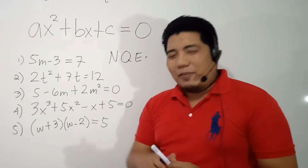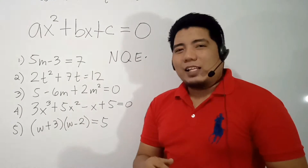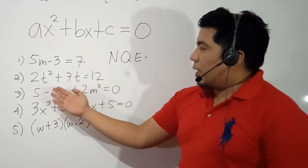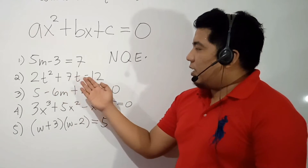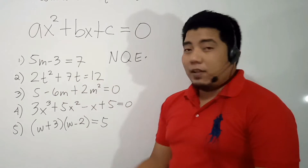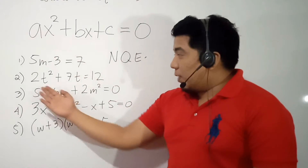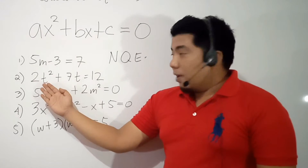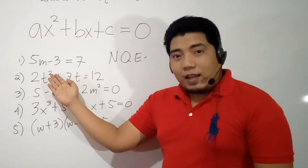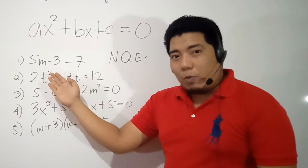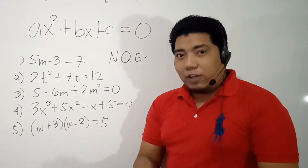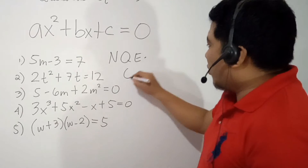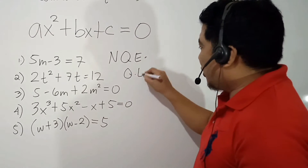Let's go to Number 2: 2t squared plus 7t is equal to 12. As we can see here, our variable has a second degree power. Therefore, this is considered to be a quadratic equation.